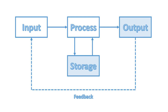The output is sometimes used as an input later on. Think of it like a central heating system: you input the temperature, process it, store the desired temperature, and the output is the heating turning on or off. The output — the current temperature — is fed back as an input, creating a feedback loop.